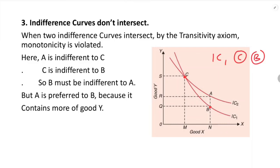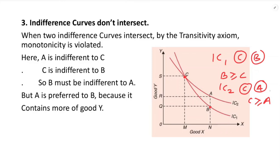Consider two indifference curves IC1 and IC2. Point B is indifferent to point C on IC1. On IC2, point C is indifferent to point A. Therefore, by transitivity, B is indifferent to C, and C is indifferent to A.